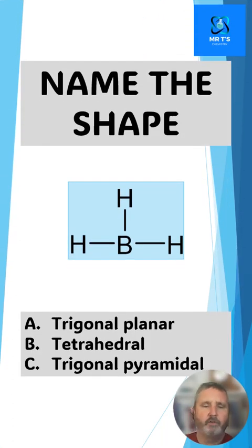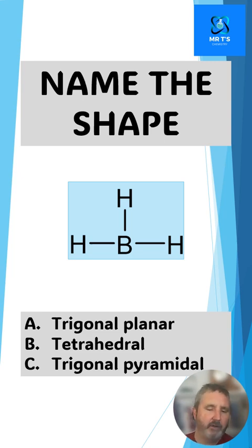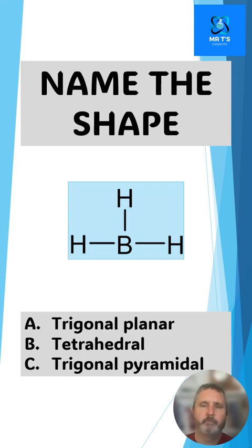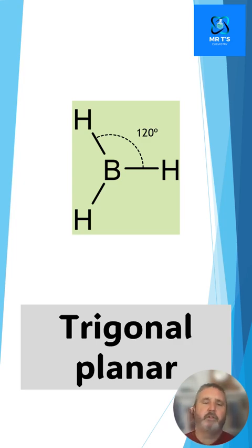This is boron trihydride. Remember boron only has a maximum of six electrons around it. So is this Lewis structure A trigonal planar, B tetrahedral, or C trigonal pyramidal? Of course this is trigonal planar because there are three electron density regions around the central boron pushing away from each other.